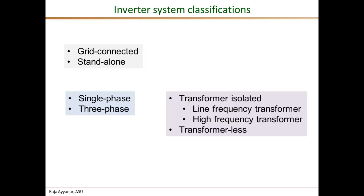Inverters can also be classified based on transformer isolation. Most PV inverters have transformer isolation in some stage — it could be a line-frequency 60 Hz transformer, mostly in utility-scale inverters, or a high-frequency transformer mostly in residential applications. A recent trend in residential rooftop inverters is to go for a transformer-less non-isolated solution, which is supported by standards and codes, requiring operation with ungrounded PV arrays.